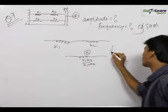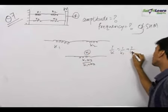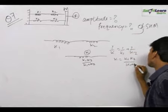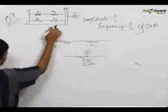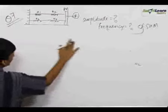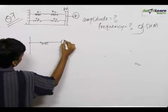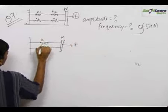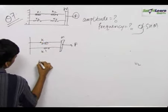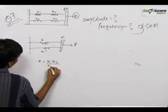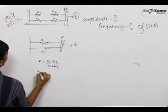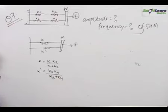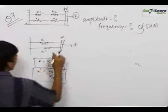This is found by: let 1 upon k be equal to 1 upon k1 plus 1 upon k2, therefore k is equal to k1·k2 upon k1 plus k2. Similarly for the other pair, the final system becomes a block of mass M with force F and two springs, where k is equal to k1·k2 upon k1 plus k2, and k dash is equal to k3·k4 upon k3 plus k4. These are the resultant spring constants.